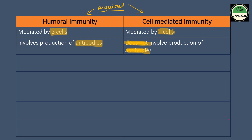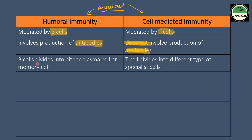The third difference is that B cells divide into either plasma cells or memory cells, while T cells divide into different types of specialist cells.